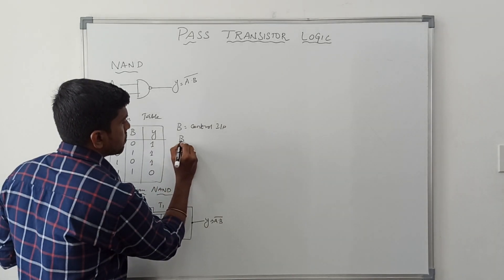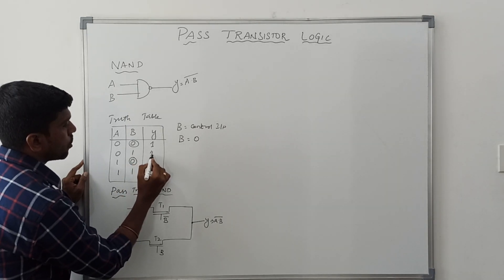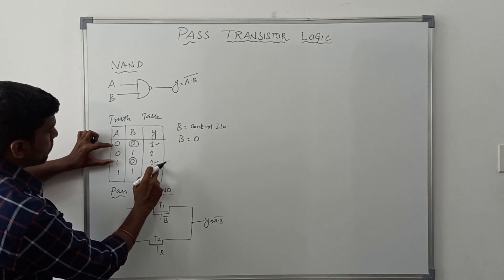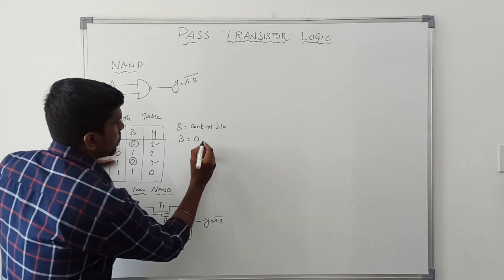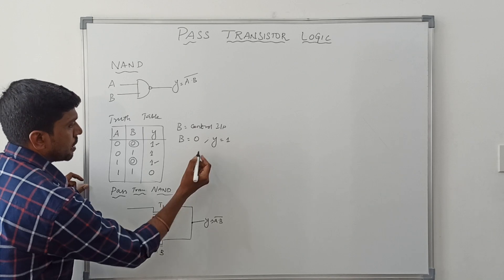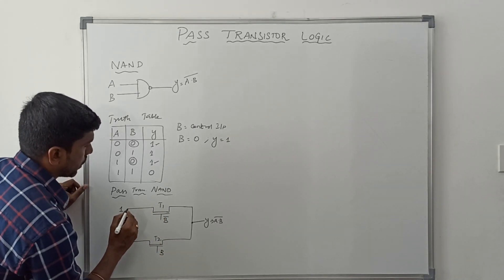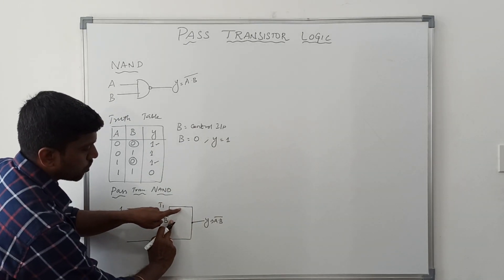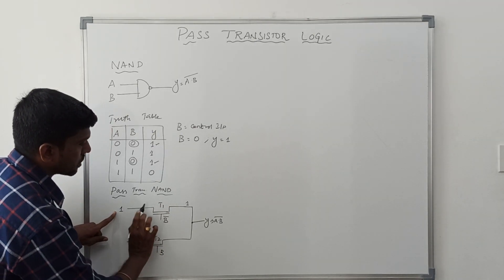First case: B value equals 0. Just verify with the truth table — when B value equals 0, the output value is 1, irrespective of the A value (A is 0 or 1), the result is 1. So when B value equals 0, the output is 1. The input value of T1 is 1, because the output value is 1. When B equals 0, this 1 is passed to the output side through T1 transistor.